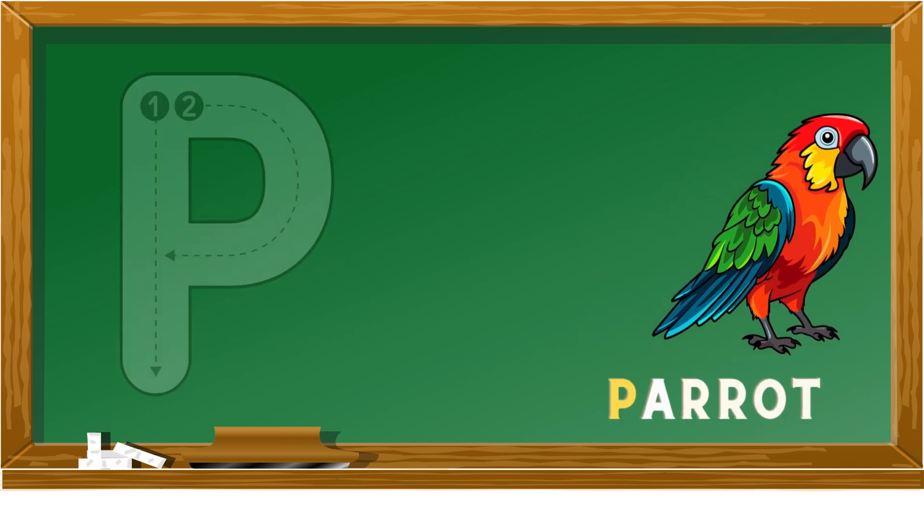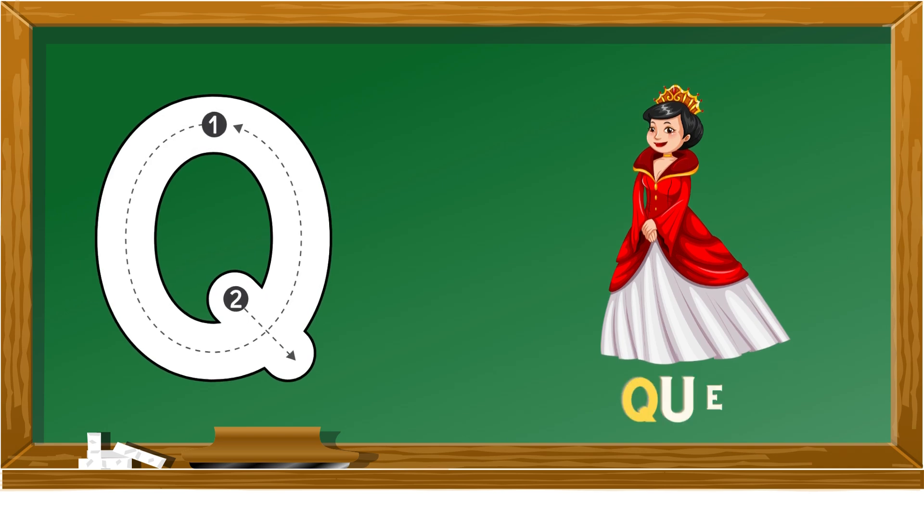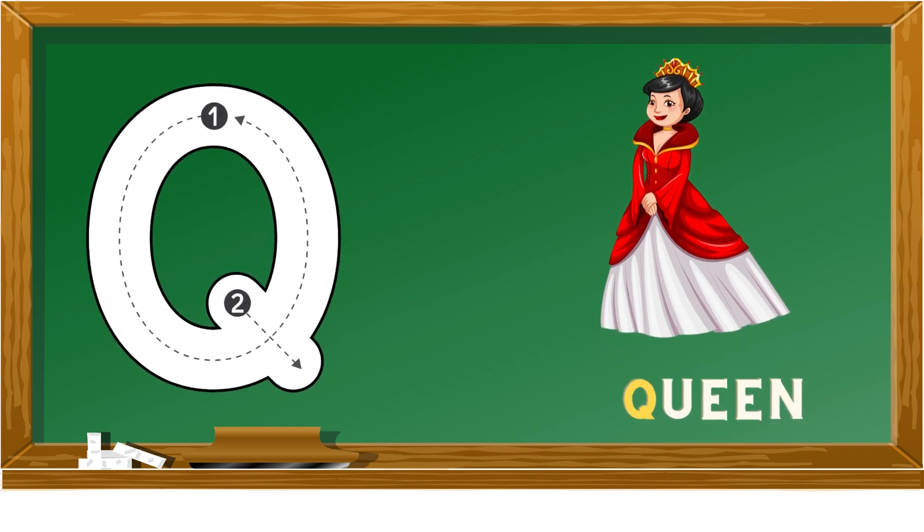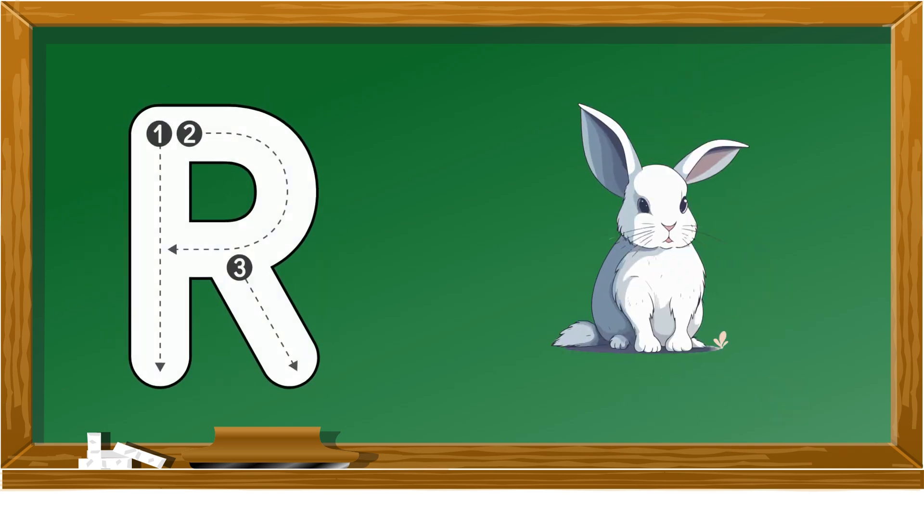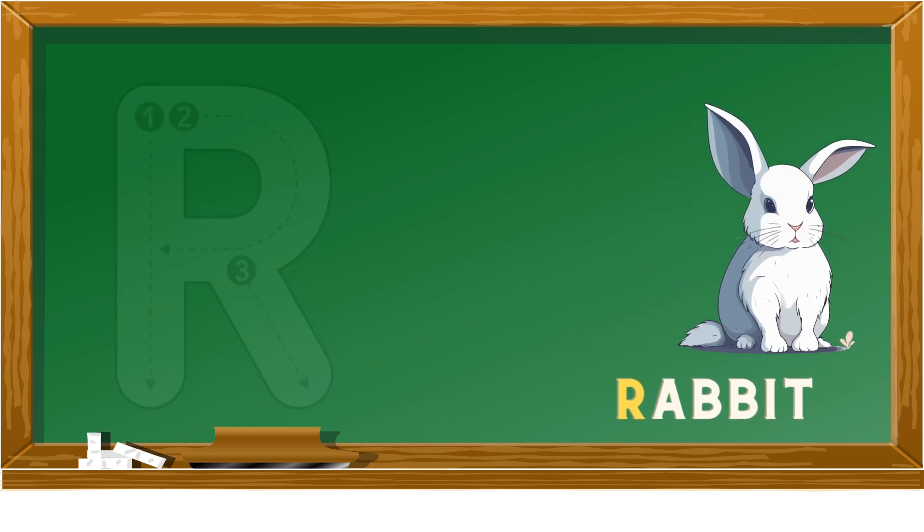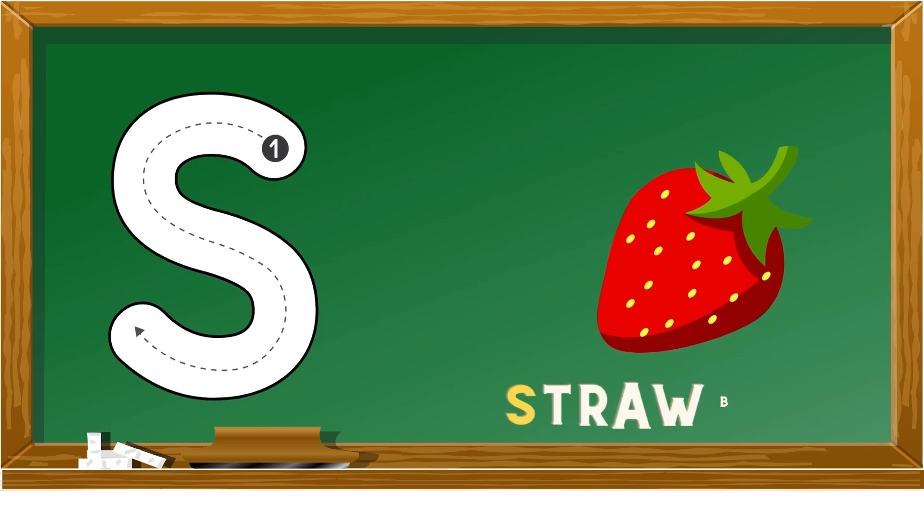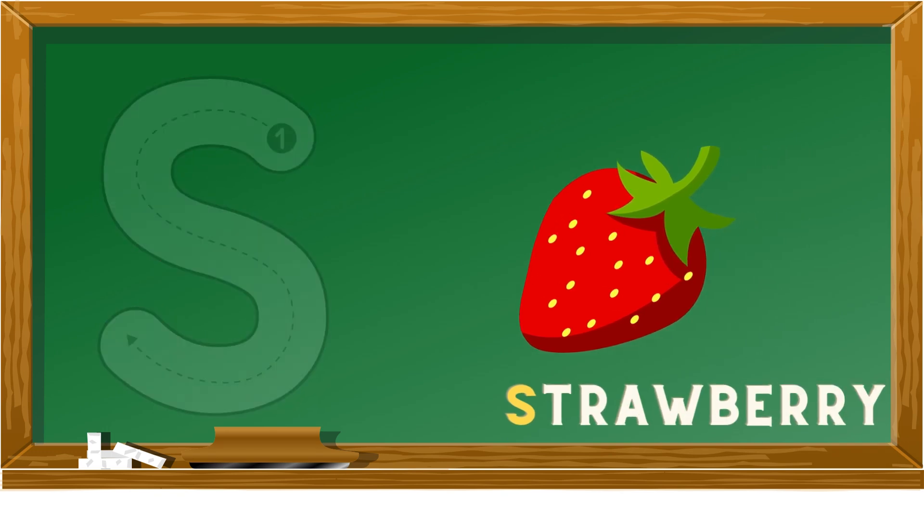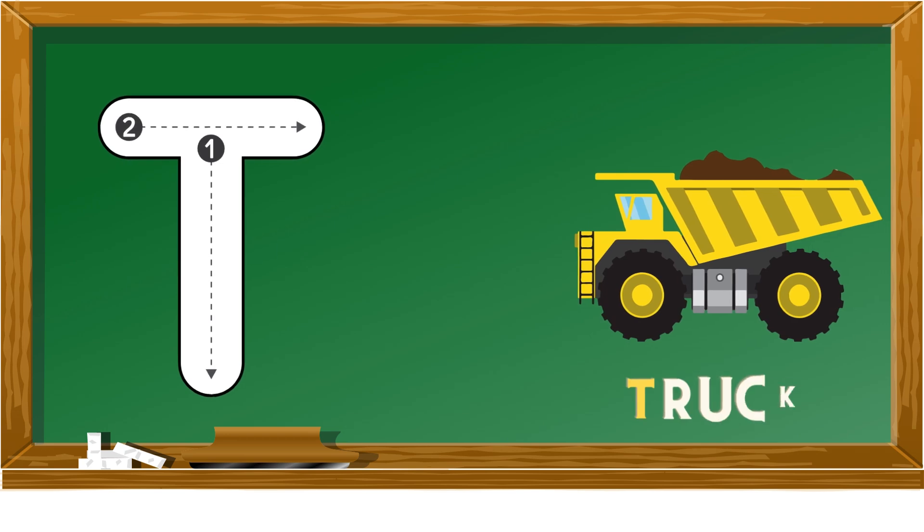Q is for queen, R is for rabbit, S is for strawberry, T is for truck.